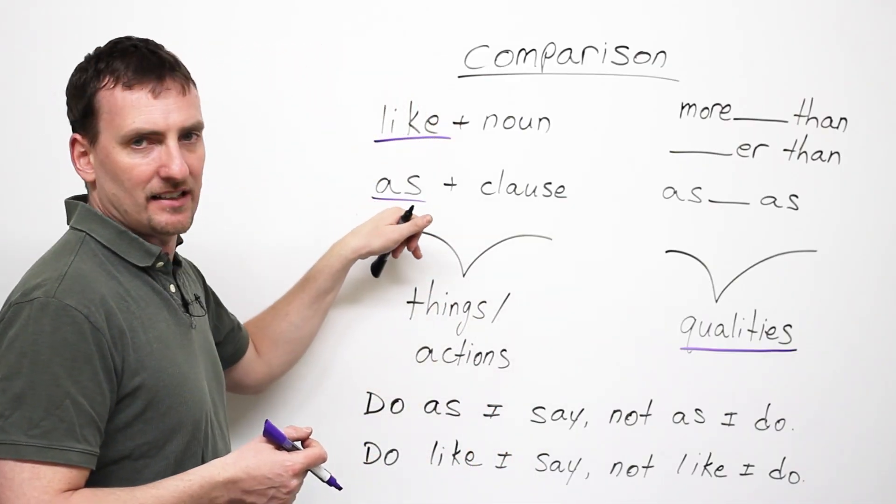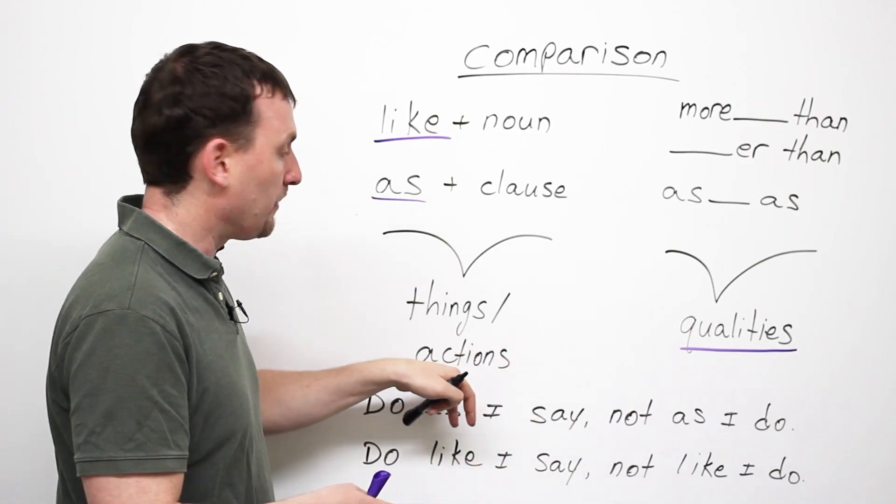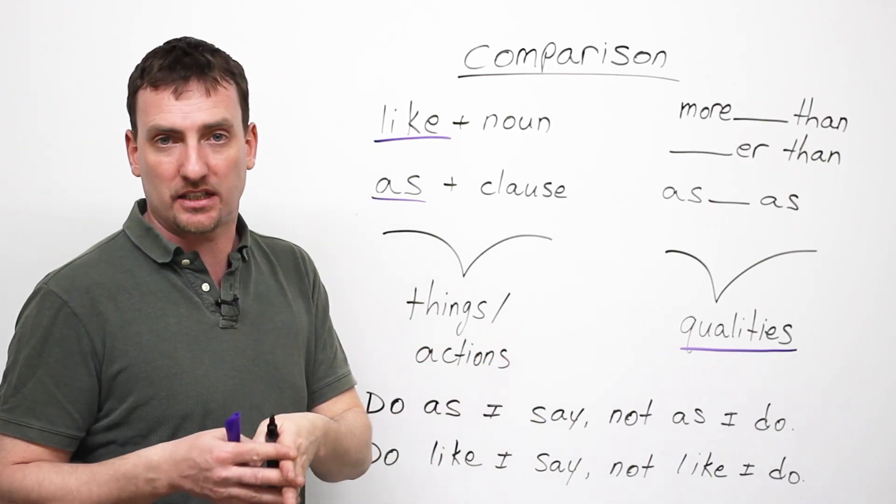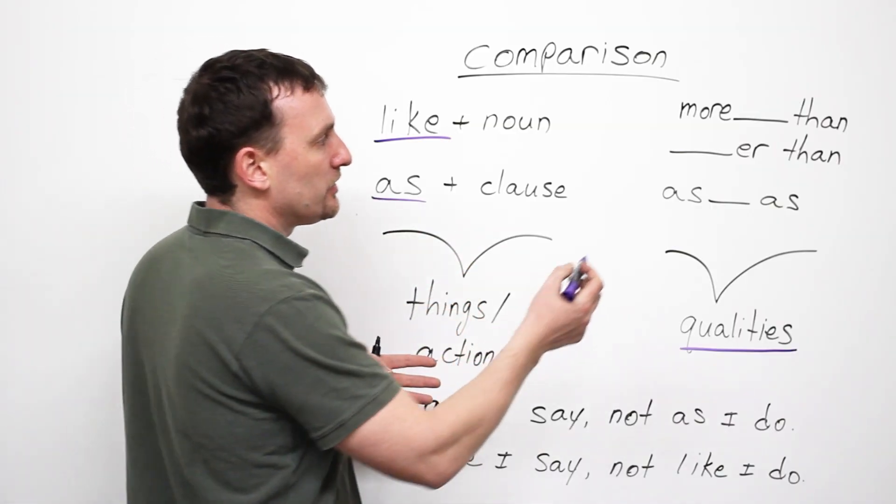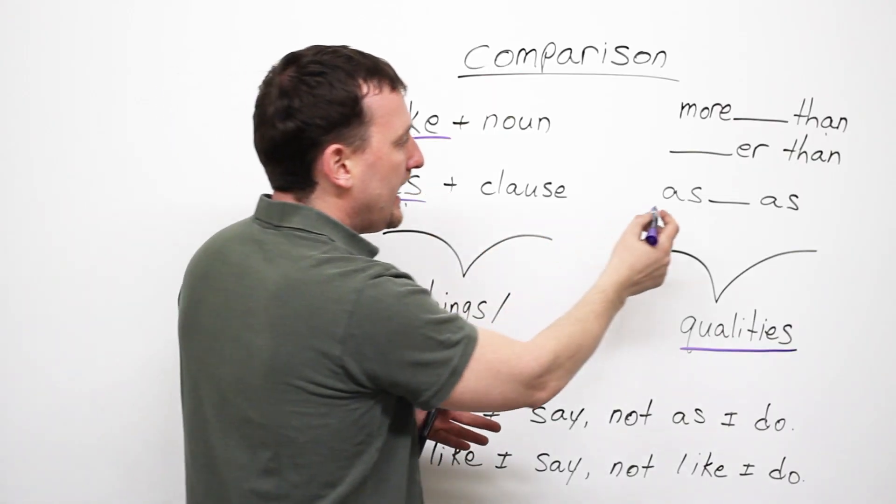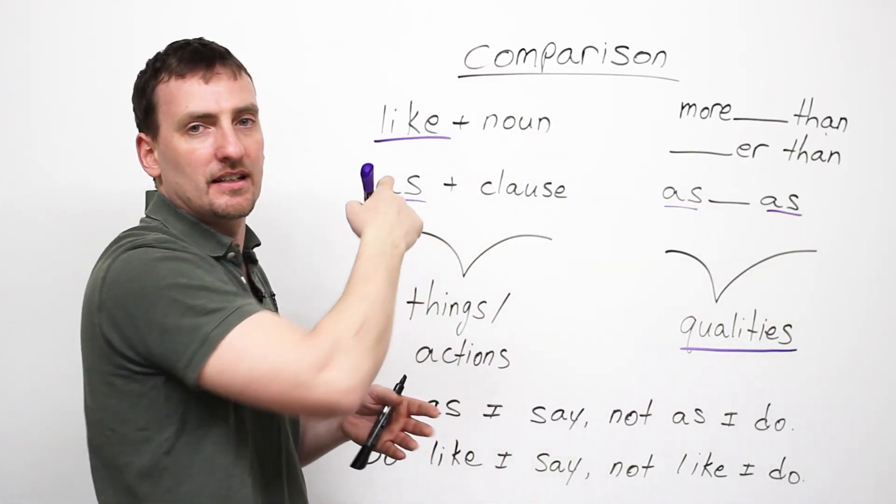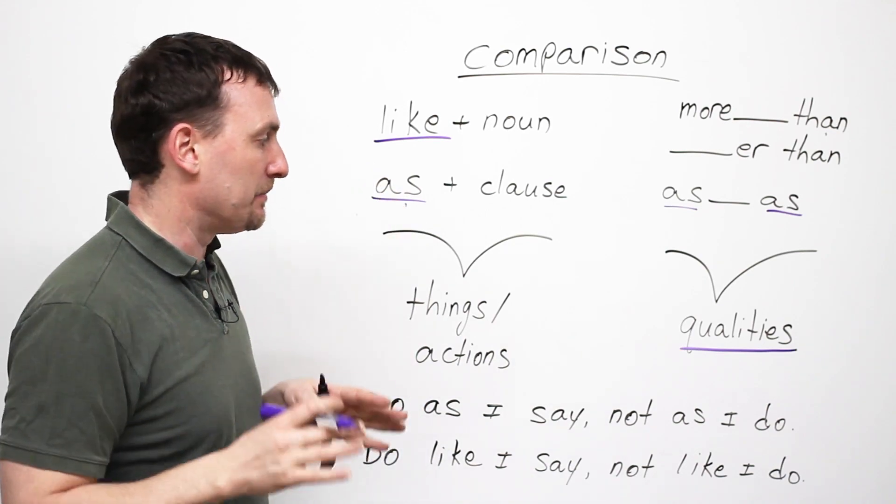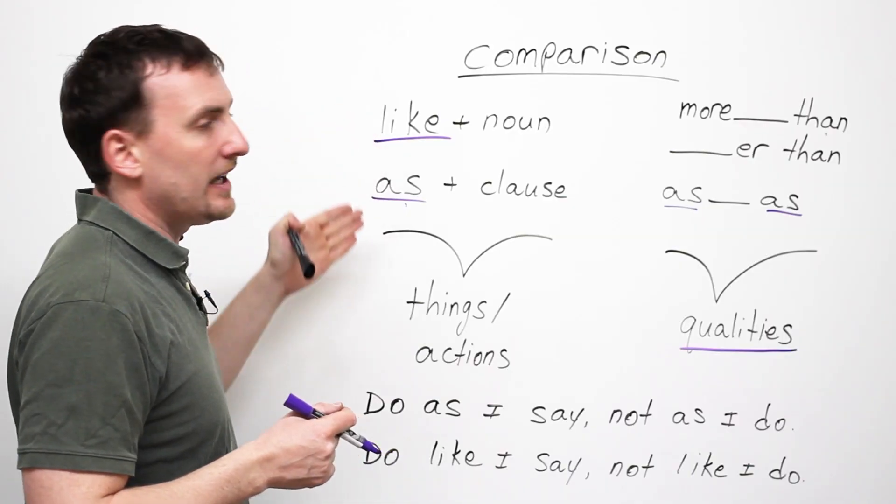When we use like and as, we are comparing things to things, we are comparing actions to actions. The big thing, the big difference you have to pay attention to is don't mix than with as or like. And don't mix this as, as, with this as. That's the main thing we want to concentrate on. So, let's look at like and as. What is the difference between these two?